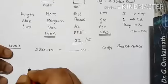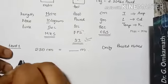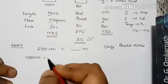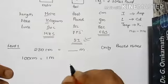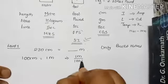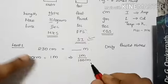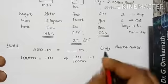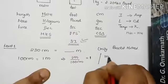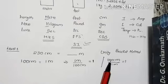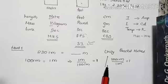Now, one plays a very important role here. We know that 100 centimeters equals 1 meter. So if I write 1 meter divided by 100 centimeters, that equals one. Similarly, 100 centimeters divided by 1 meter also equals one. So we have two different expressions that both equal one.